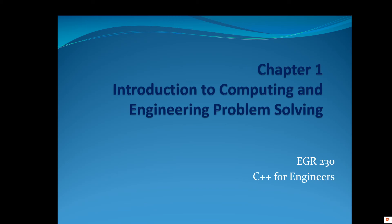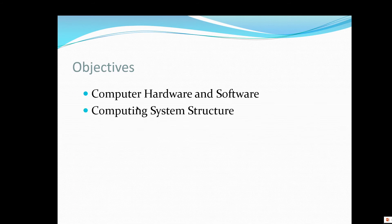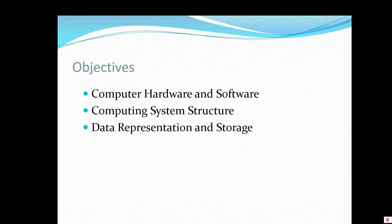I'm just going to spend a few minutes taking a look at chapter one, and here are the main objectives of this chapter. We'll look at the idea of computer hardware and software — the difference, which is one of the basic concepts with computing. Computing system structure — how a computer is put together. And data representation and storage, I'll actually leave that to part two.